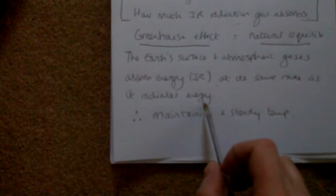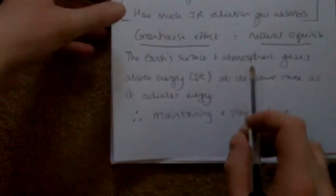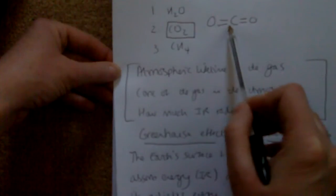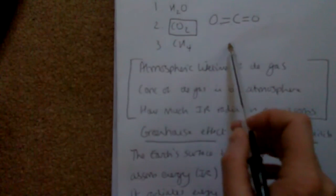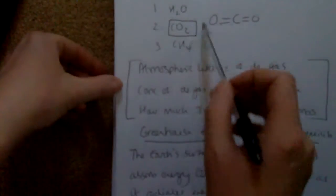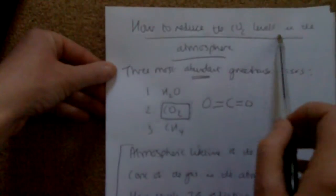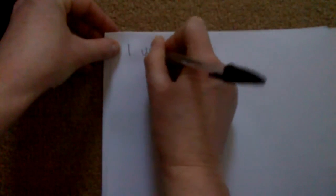The greenhouse effect is something we need — it's a natural equilibrium. The atmospheric gases absorb energy from the Sun at the same rate as they radiate energy. However, we're putting too many greenhouse gases into the atmosphere. The one we're most concerned about is carbon dioxide, because we can actually do something about it. There are four simple things we can do to reduce CO2 levels in the atmosphere.